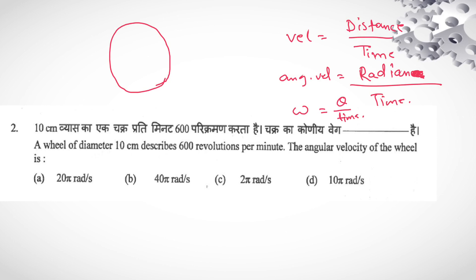for one complete revolution, θ is 2π radian. For n revolutions, total distance is 2πn. So our angular velocity, you will get angular velocity. In n revolutions, it is 2πn divided by your time.